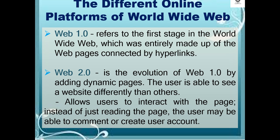The different online platforms of the World Wide Web include Web 1.0, which refers to the first stage of the World Wide Web, entirely made up of web pages connected by hyperlinks. Web 2.0 is the evolution of Web 1.0 by adding dynamic pages, where the user is able to see a website differently than others.